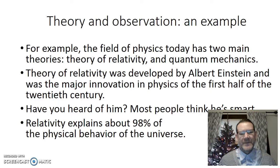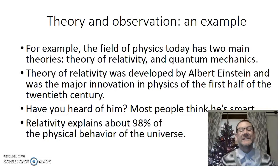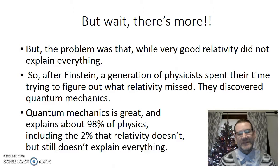The field of physics today has two main theories: the theory of relativity and quantum mechanics. The theory of relativity was developed by Albert Einstein and was the major innovation in physics in the first half of the 20th century. Relativity explains about 98% of the physical behavior of the universe — we've been testing it and testing it and it holds up pretty well. But although a very good theory, relativity does not explain everything. Specifically, it does a really good job at explaining big things — how planets move, the cosmos, the Big Bang — but it doesn't explain small stuff.